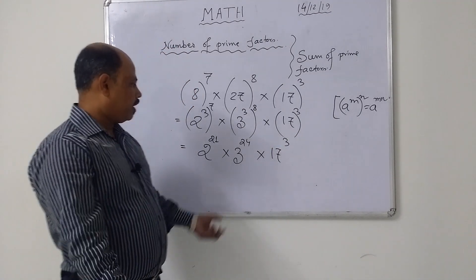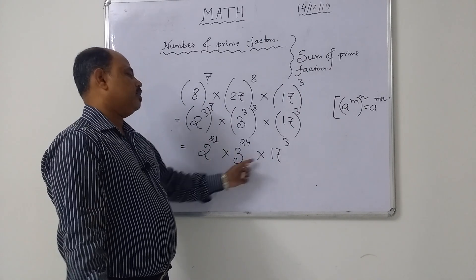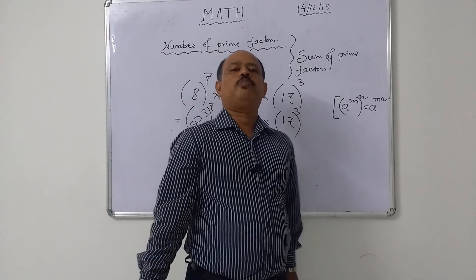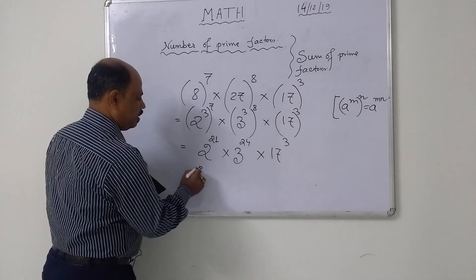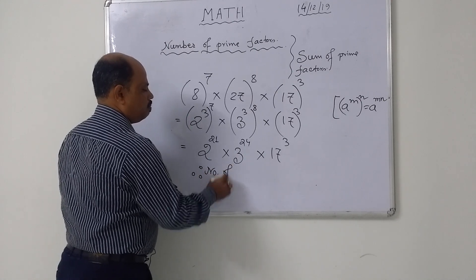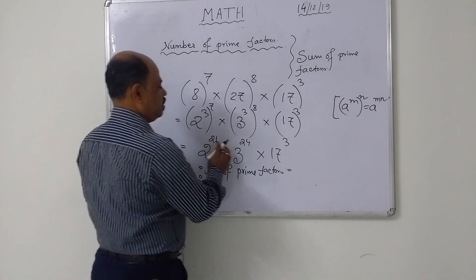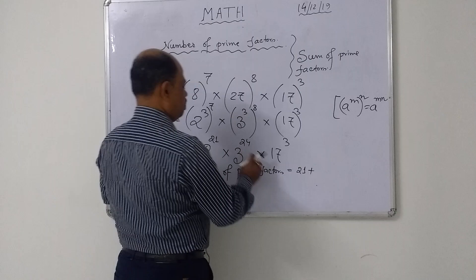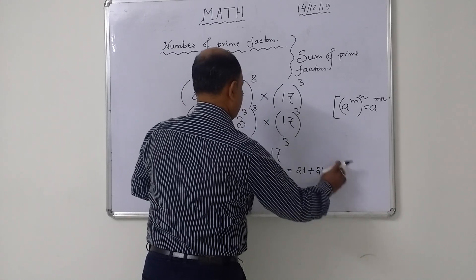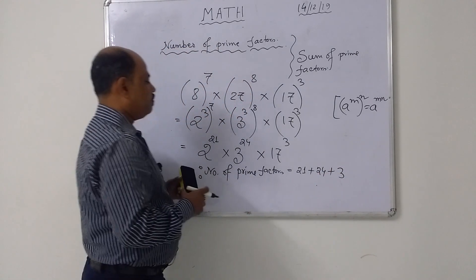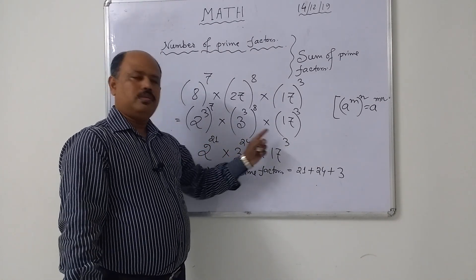Check again: are all base numbers prime? Yes. When all base numbers are prime, the number of prime factors equals the sum of all the powers. So the number of prime factors equals 21 plus 24 plus 3.